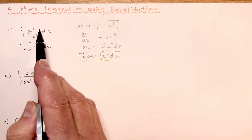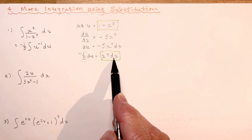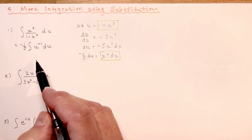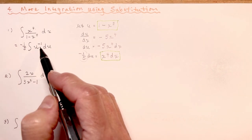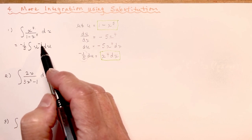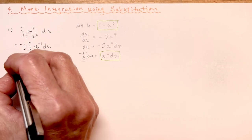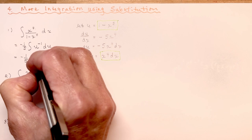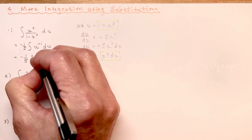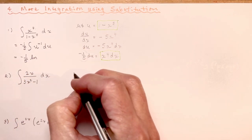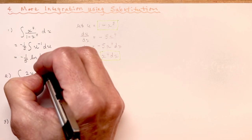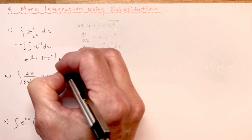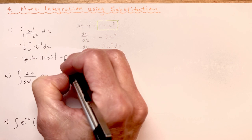I've replaced x to the 4th dx with du. Now this is pretty simple because u to the minus 1 — and you have to be good with your integrations — integrates to the natural log of u. So I have minus 1/5 times the natural log of the absolute value of 1 minus x to the 5th, plus c. And I'm all done.